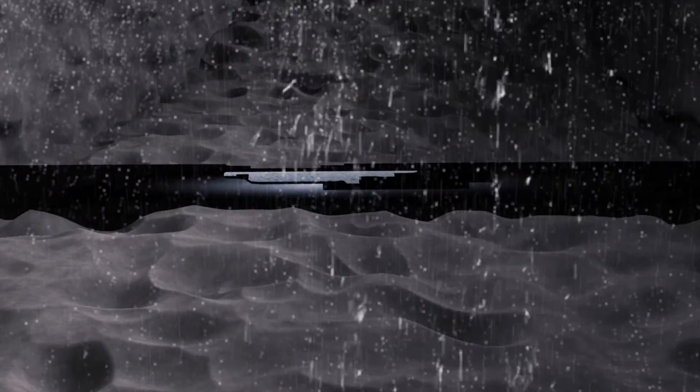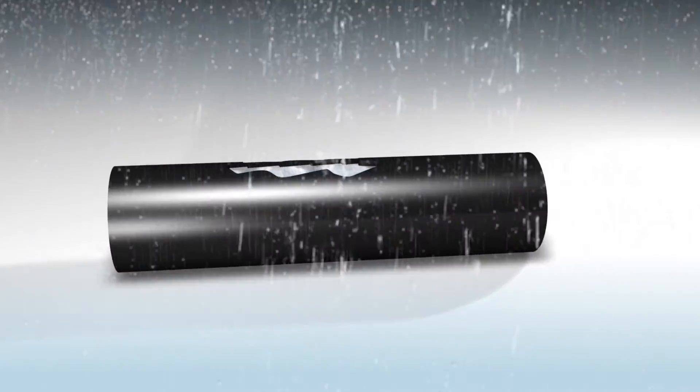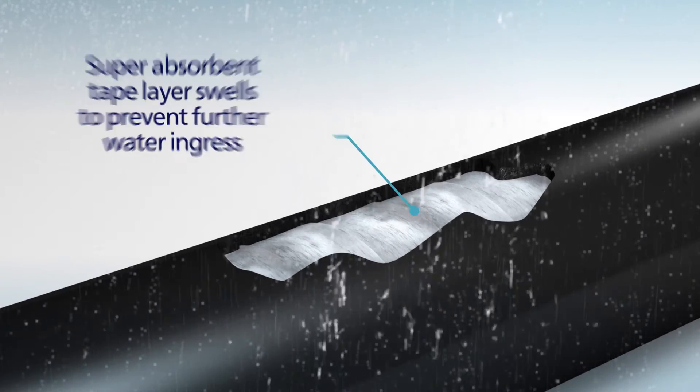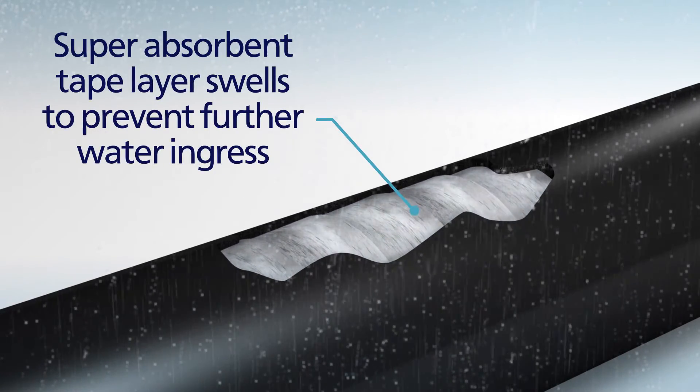If a super absorbent based tape or yarn is in place, this will rapidly absorb the liquid at the point of entry and swell to form a gel, blocking any further water ingress.